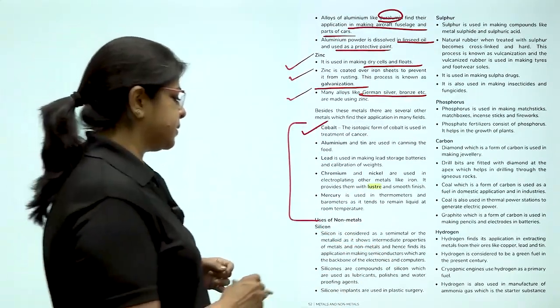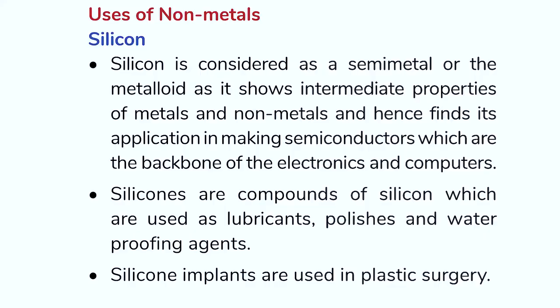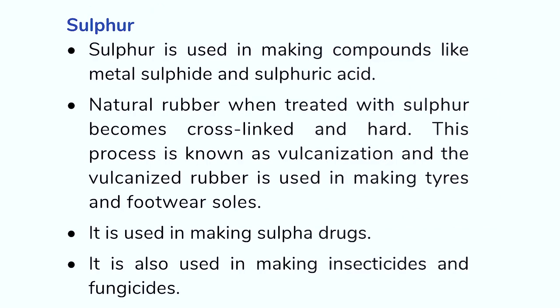Coming next to the uses of non-metals. Let's understand the uses of silicon first. Silicon is considered as a semi-metal or the metalloid as it shows intermediate properties of metals and non-metals. And hence, finds its application in making semiconductors, which are the backbone of electronics and computers. Silicons are compounds of silicon, which are used as lubricants, polishes and waterproofing agents. Silicon implants are used in plastic surgery.